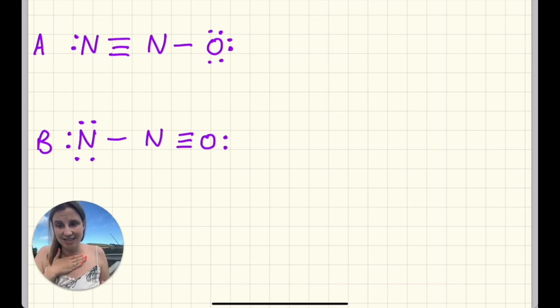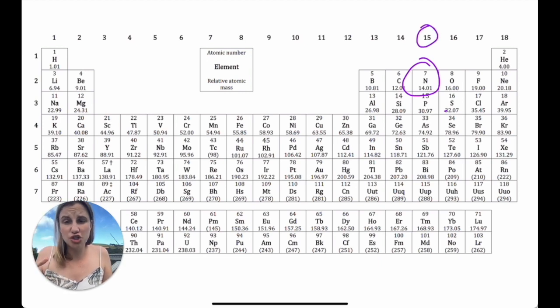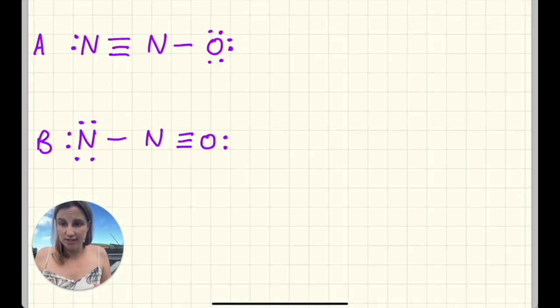So let's have a look at doing the formal charge for each atom individually. All that I'm going to do is look at the periodic table and how many electrons nitrogen should have in its outer energy level. Nitrogen is in group 15, so it should have five electrons belonging to it in the Lewis diagram.